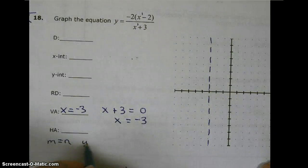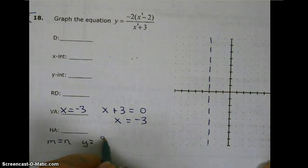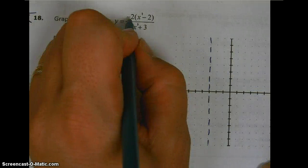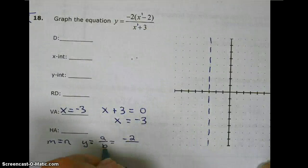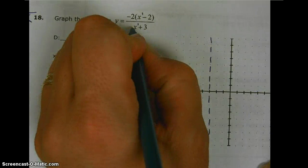a is negative 2, the leading coefficient. b is the leading coefficient on the bottom, which is 1.